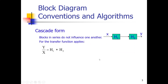We can discuss two basic aspects for blocks and for signals. When we have two systems in cascade or in series, then we can say the output signal Y of system H2 equals H2 times H1 times X. So Y over X equals H1 times H2. We can replace the cascade or series connection of H1 and H2 by a new system equal to H1 times H2.